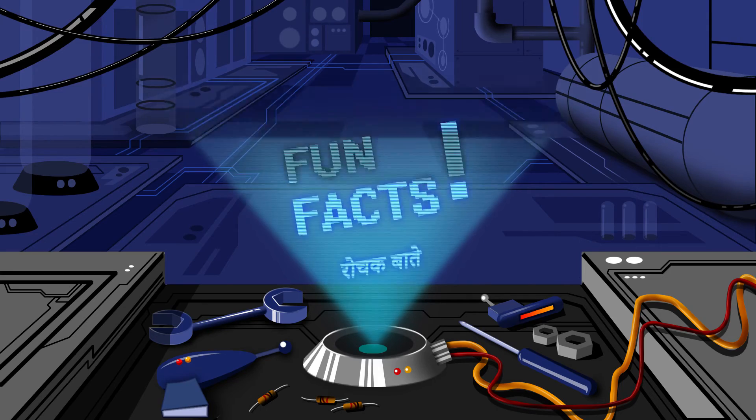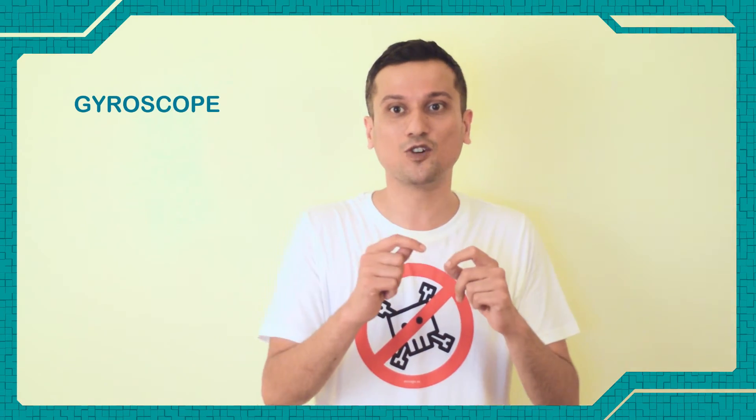It's time for some fun facts! Did you know that the name gyroscope was chosen by the French scientist Leon Foucault? In the early 1850s, he made a basic gyroscope and used it to prove that the earth was actually rotating.